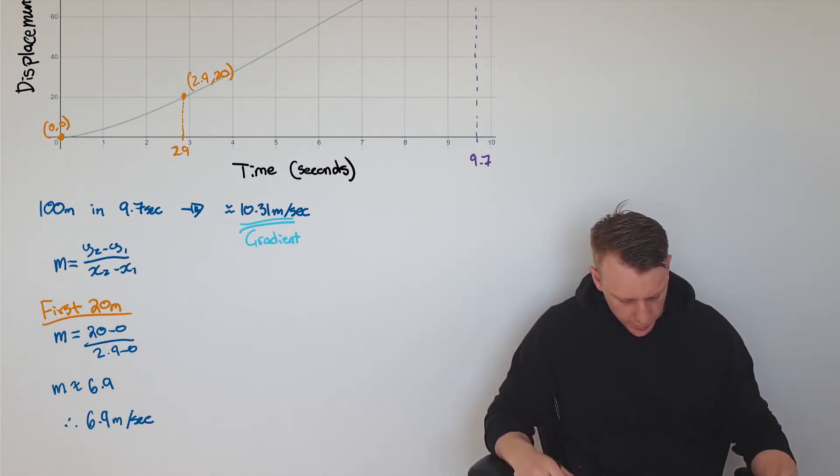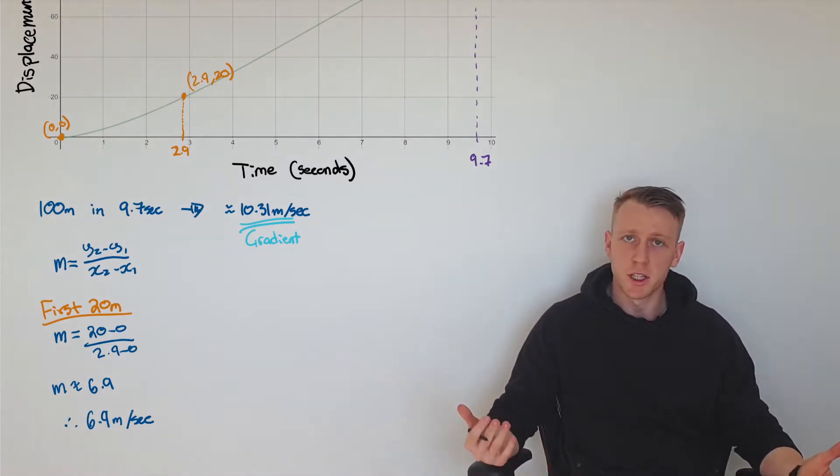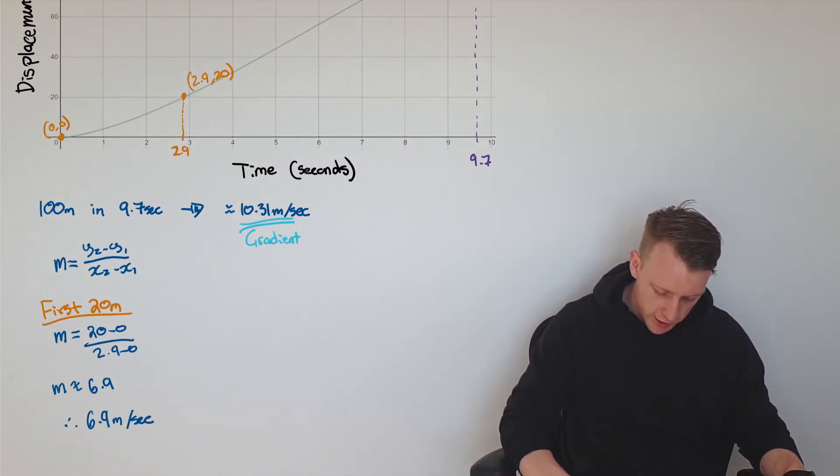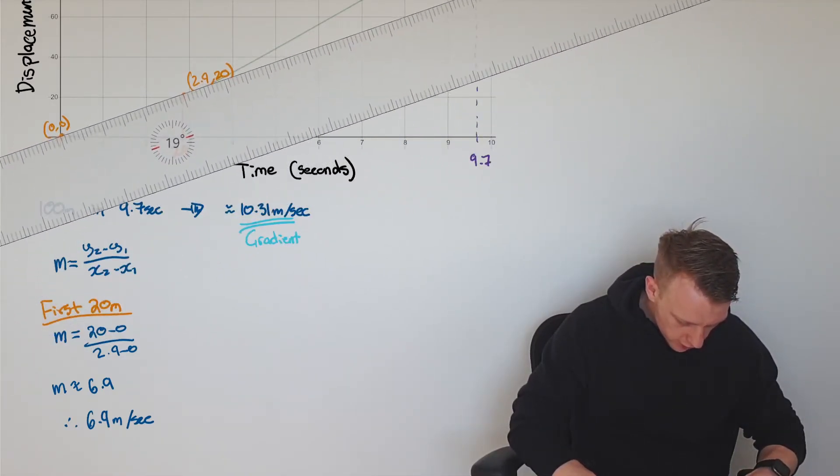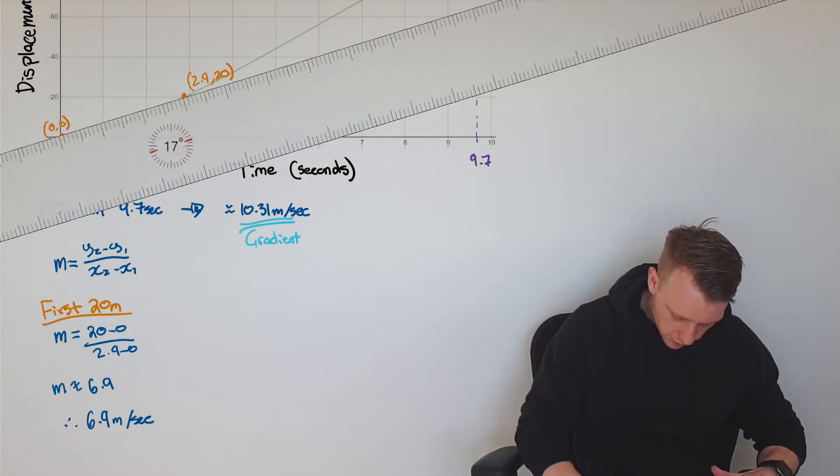You can see he runs at about 6.9 meters per second in the first 20 meters of this race. Just to illustrate this point here, this means that this gradient here is not as steep as what it was before: 6.9 meters per second.